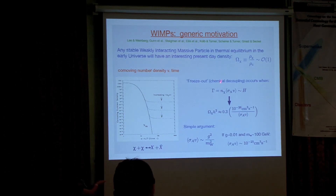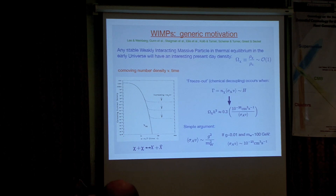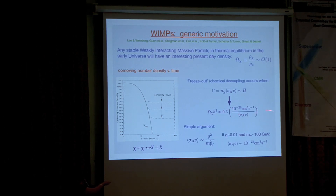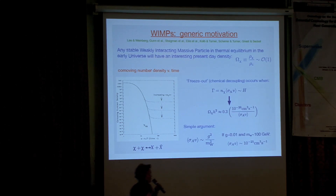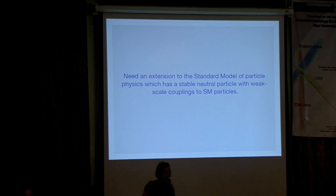Very roughly, freeze-out happens when the annihilation rate is roughly equal to the Hubble expansion rate, and you end up with a present-day density related to the thermally averaged annihilation cross-section times velocity. You can make a very simple argument: if your particle is interacting via the weak interaction, the cross-section is given by some expression where G is a coupling strength at the weak scale. If you put in typical numbers, you end up with roughly the right order of magnitude density today — of order one. That's the very generic motivation, but obviously we need an actual concrete candidate to take this seriously.